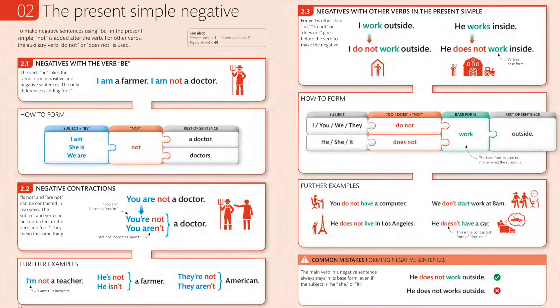Think about it — when we talk, we say 'you're not a doctor,' not 'you are not a doctor.' The full form 'you are not a doctor' is used frequently when there is a sensitive topic that you need to emphasize. So the flow of speech can give the listener an idea of whether the sentence is positive or negative.